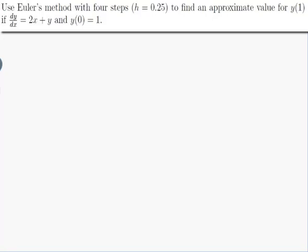The question is, use Euler's method with four steps, i.e. h is equal to 0.25, to find an approximate value for y of 1 if dy on dx is equal to 2x plus y, and y of 0 is equal to 1.